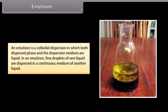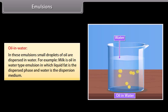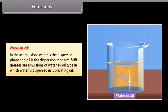An emulsion is a colloidal dispersion in which both the dispersed phase and the dispersion medium are liquid — fine droplets of one liquid dispersed in another. Emulsions are of two types: oil in water (O/W), where droplets of oil are dispersed in water (e.g., milk, where liquid fat is dispersed in water); and water in oil (W/O), where water is the dispersed phase and oil is the dispersion medium (e.g., stiff greases, where water is dispersed in lubricating oil).